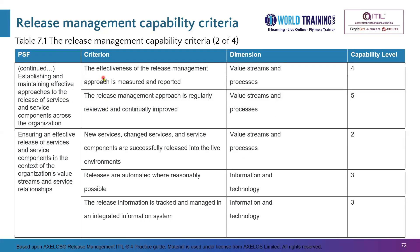Continuing with the first PSF: at level 4, the effectiveness of the release management approach is measured and reported. At level 5, the approach is regularly reviewed and continually improved. So for this first PSF, no criteria exist at level 2. Level 3 covers responsibilities, approaches, and competencies. Level 4 covers integration with other standards and measurement and reporting. Level 5 covers improvement.